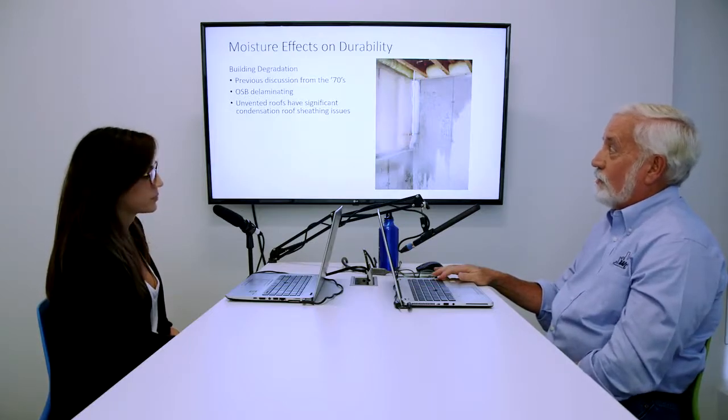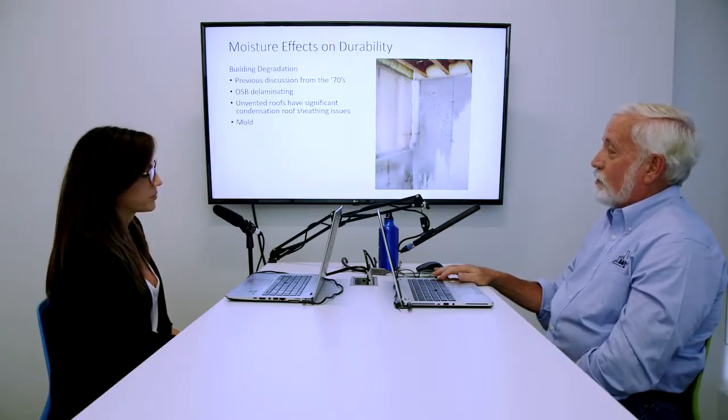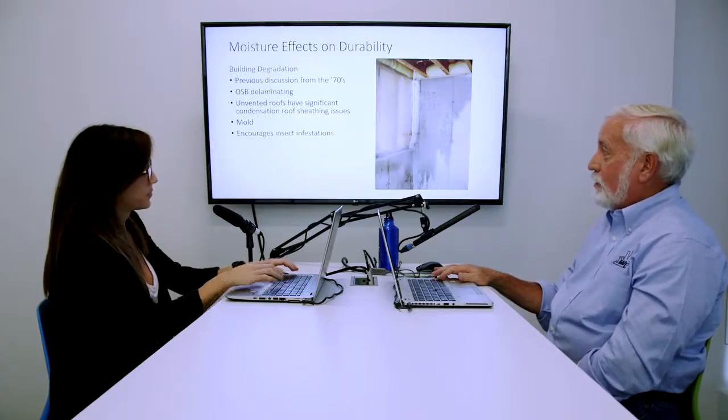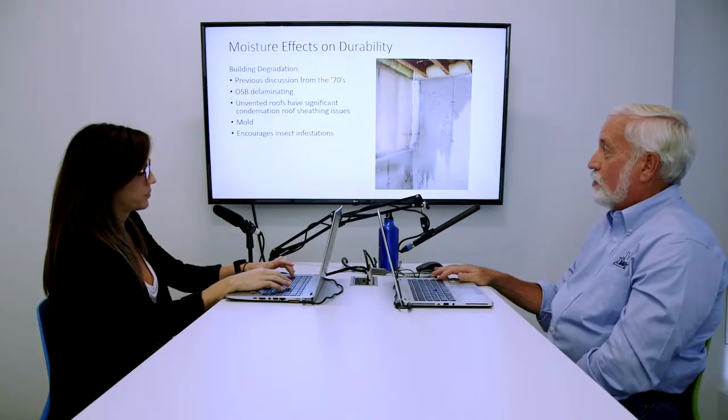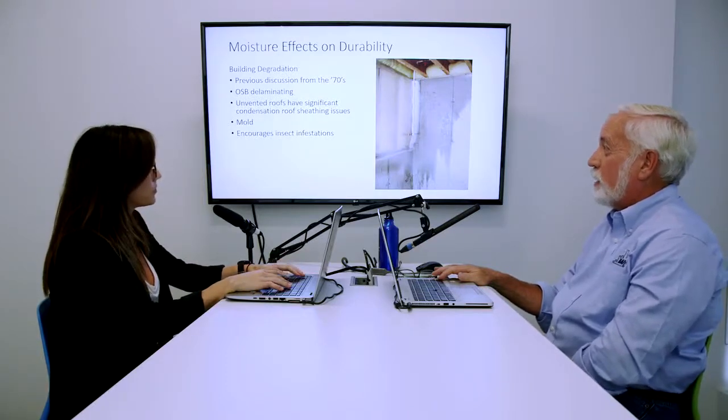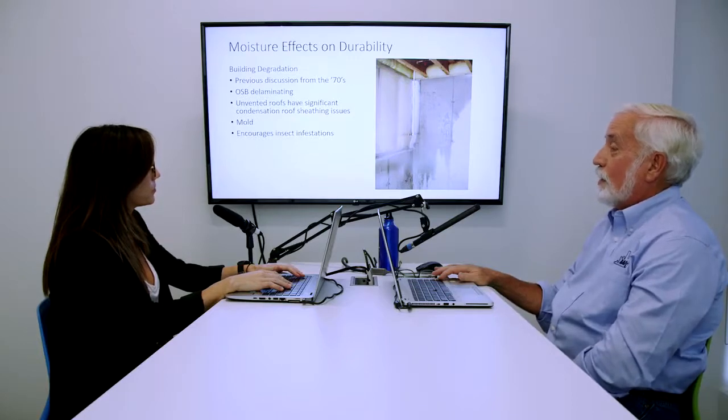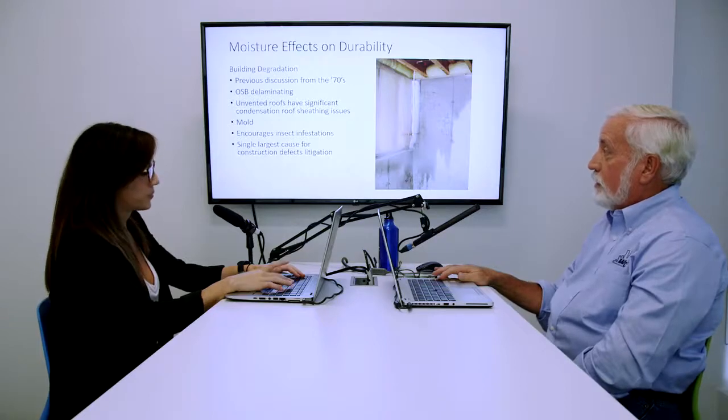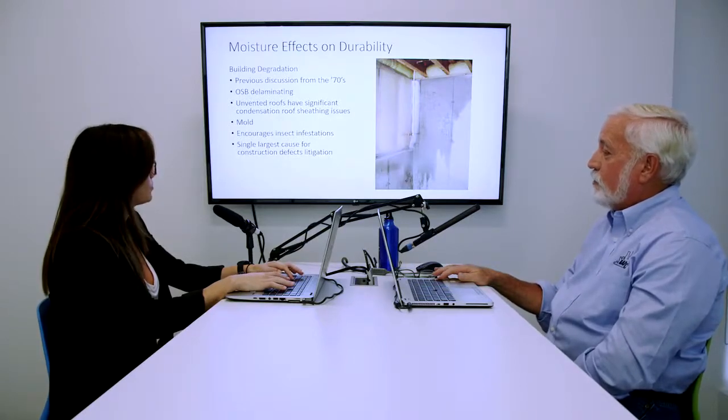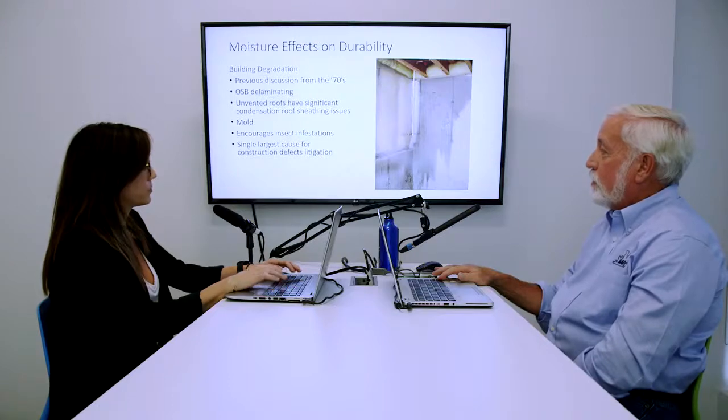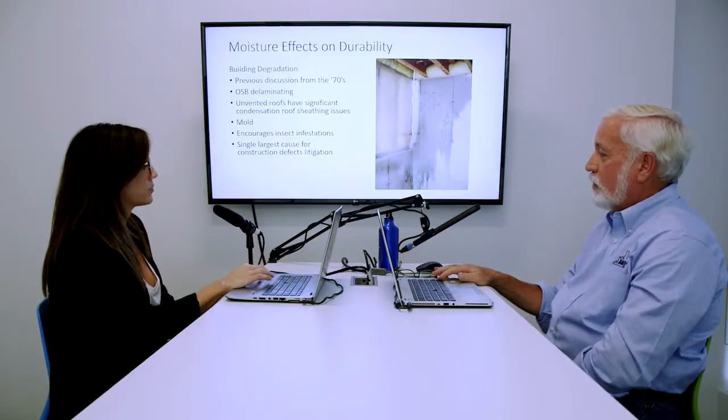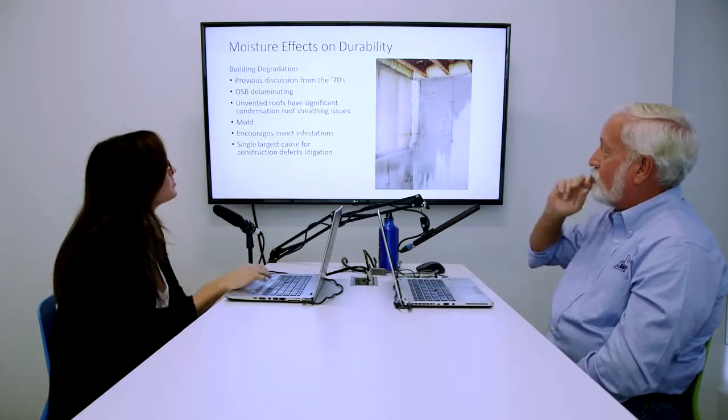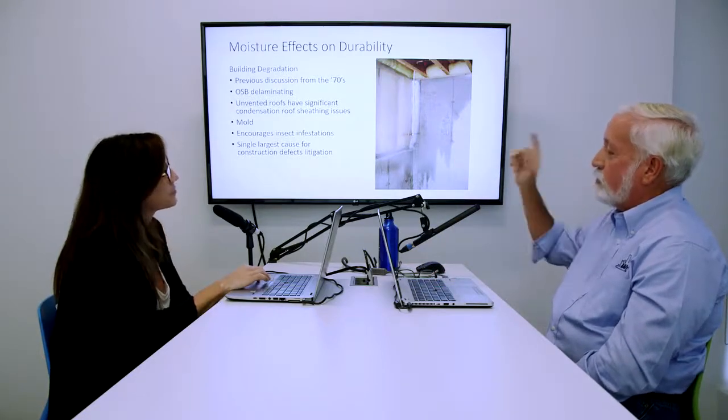Mold is an issue. With lots of moisture, it encourages insect infestations. They do have termite issues in the south because termites like moist areas. Moisture is without question the single greatest cause of construction defect litigation going on right now.